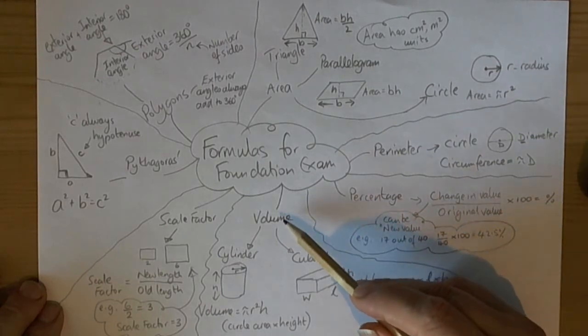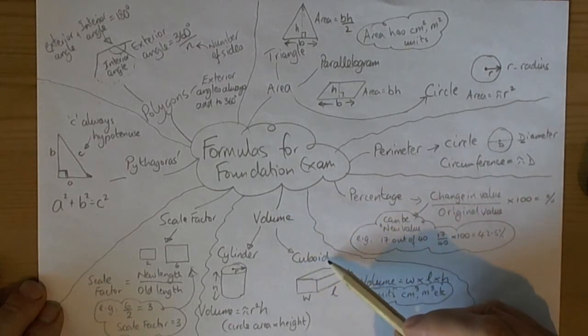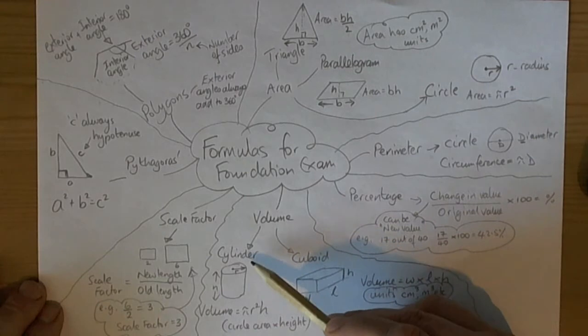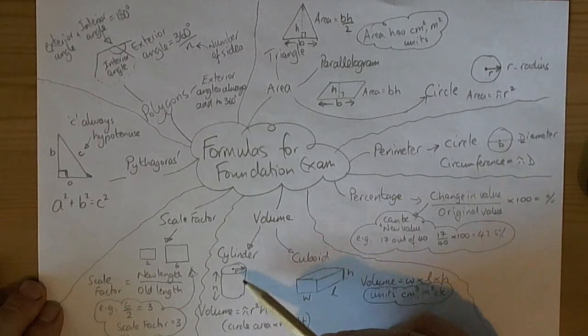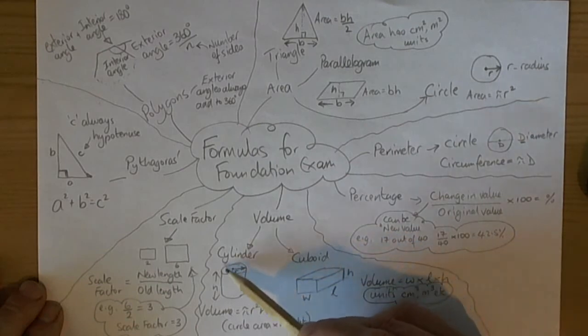We need to remember our formulas for volume. The cuboid formula is width times length times height. The cylinder formula is pi r squared h. Both of these are prisms. The prism formula is given in the front of the exam paper, and it says the area—so for the cylinder, a circle—times the length. For a cylinder, we call that the height.